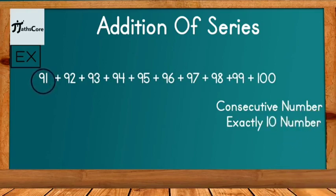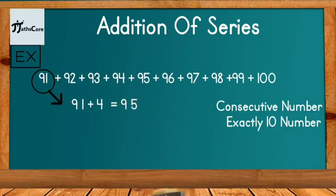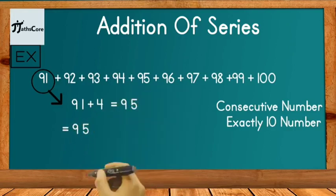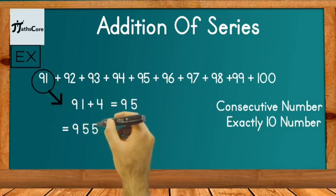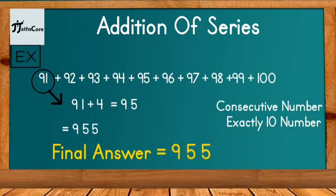So we can apply Vedic math technique here. So let's take first number 91 here and add 4 in it. 91 plus 4 is equal to 95. Now take this 95 in the next step and write down 5 after 95. And this is your final answer 955 which is addition of given series.